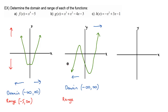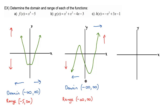For the range, what's our lowest output, or lowest y value, going to be? An arrow is going downward, so it's going to go towards negative infinity. And then what's our highest y value? We're going up towards positive infinity. So our range is all real numbers — any number will work for the range. Same thing for the domain: all real numbers.